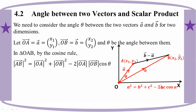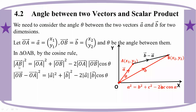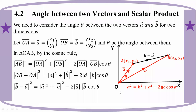If B minus A, then B-A will be 0. B-OA will be 0. This first term is 0.